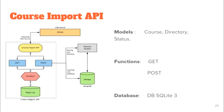Course import has three main modules. First is the course import API itself. The second is cloning that course from the IITBX server into the remote system using GitPython. Third is inserting the course into MongoDB using PyMongo. The course import API's database has attributes for course, directory, and status, and uses SQLite3.